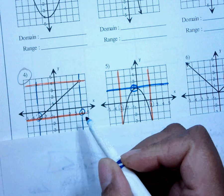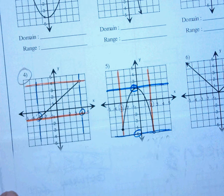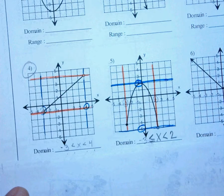So how did you write your answer? Negative three. Less than. X. Less than. Four. Good job. What did you get for the range?